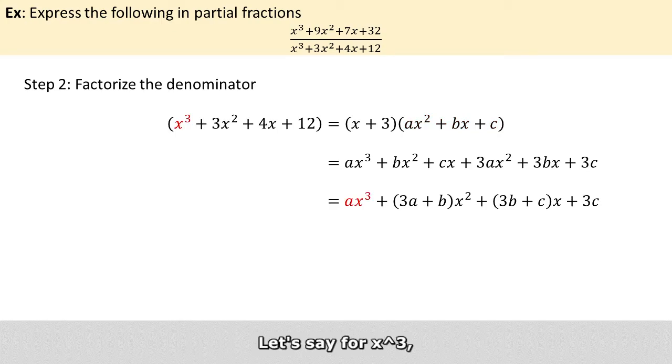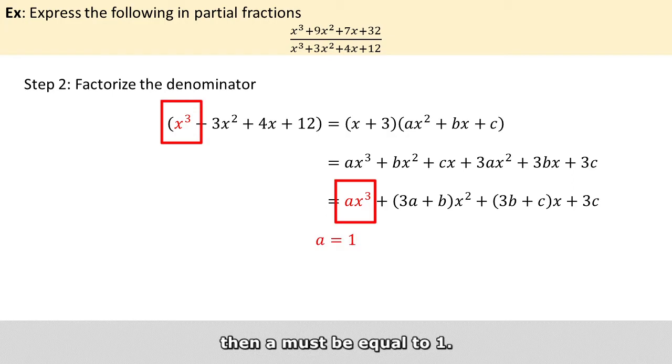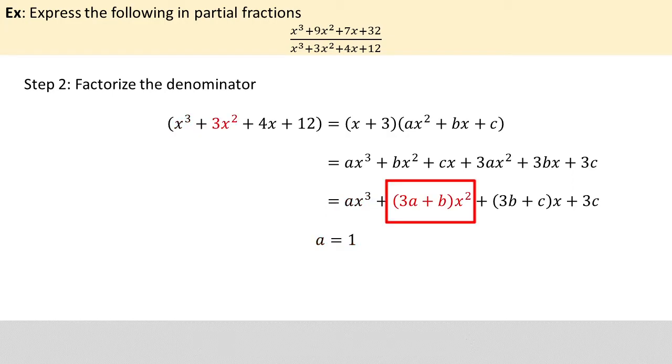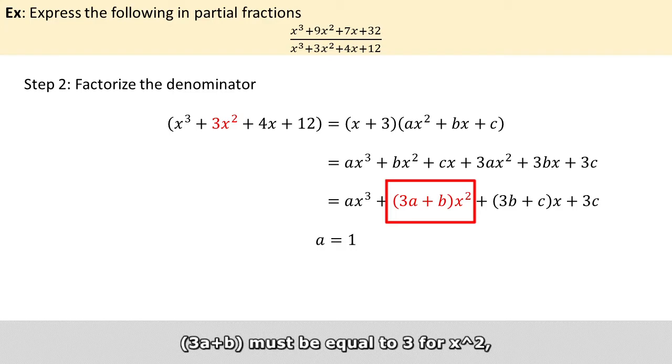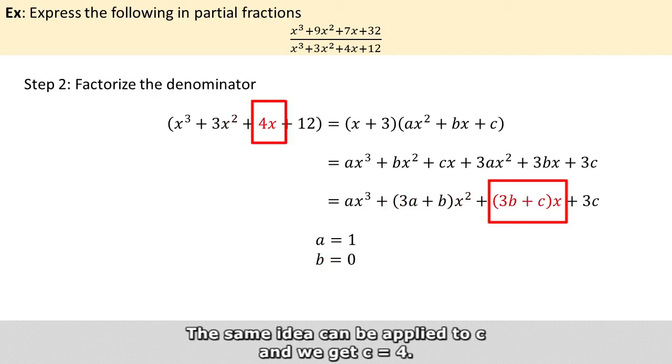So for x³, because its coefficient is 1 and here the coefficient is a, then a must be equal to 1. Moving on to the next variable, 3a + b must be equal to 3 for x². So we get b equals 0 in this case. And then same idea can be applied for c and we get c equals 4.